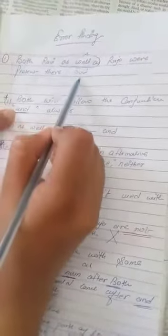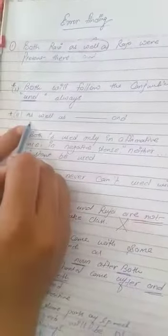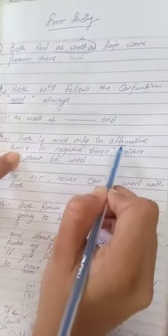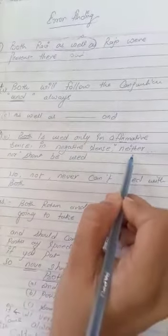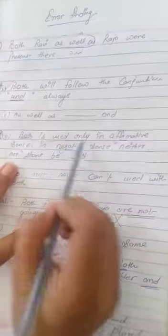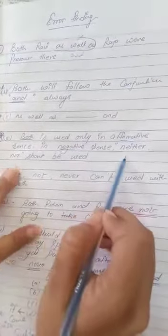Second, 'both' is used only with affirmative sentences. Affirmative means positive. 'Both' is never used with 'no', 'never', and so on. It does not use with negative sentences. 'Both' is used only in affirmative sentences. In negative sentences, 'neither nor' or 'either or' is to be used.